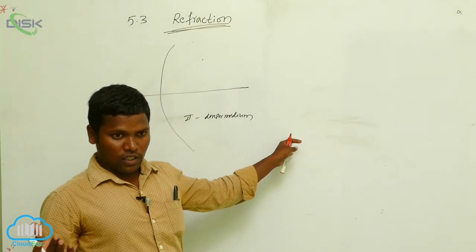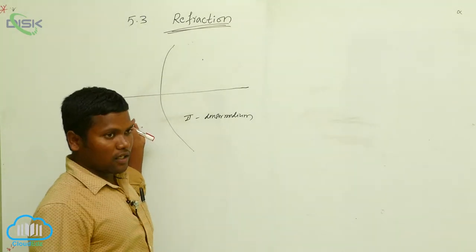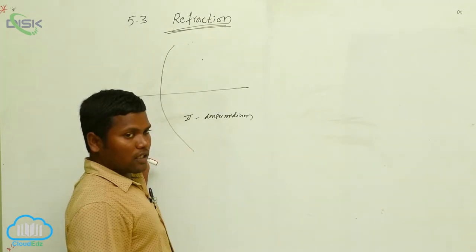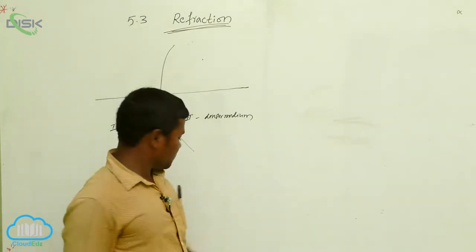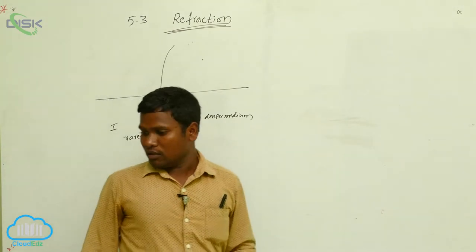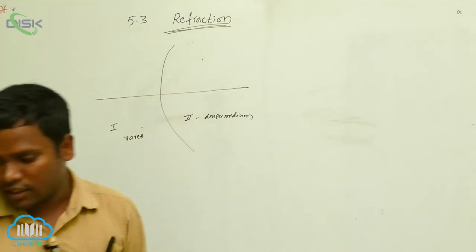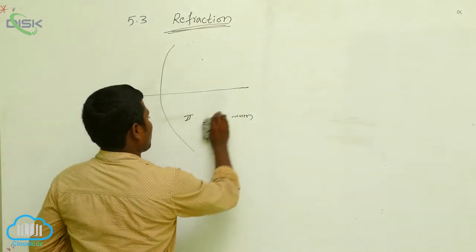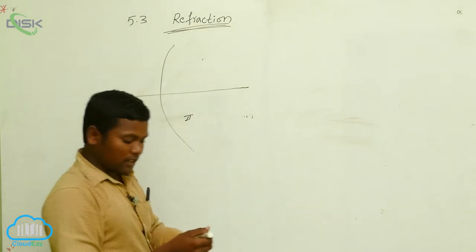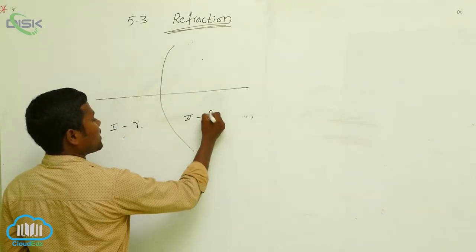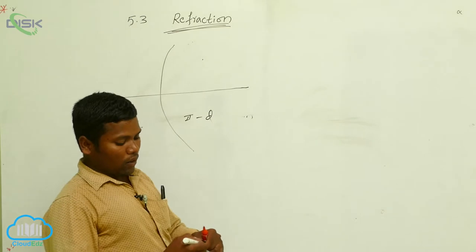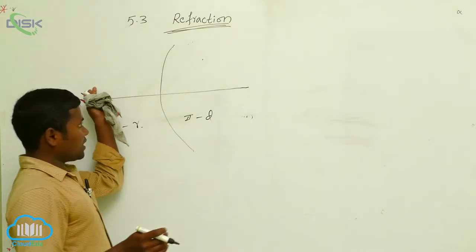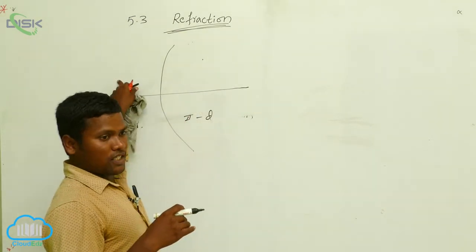You may consider — that is your choice. You may consider either this is the rarer medium and this is the denser medium, or else you can consider this is the rarer medium and this is the denser medium. It depends upon your choice. Now I am considering here this is the rarer medium and this is the denser medium. My light ray started from the first medium to the second medium, or second medium to first medium.